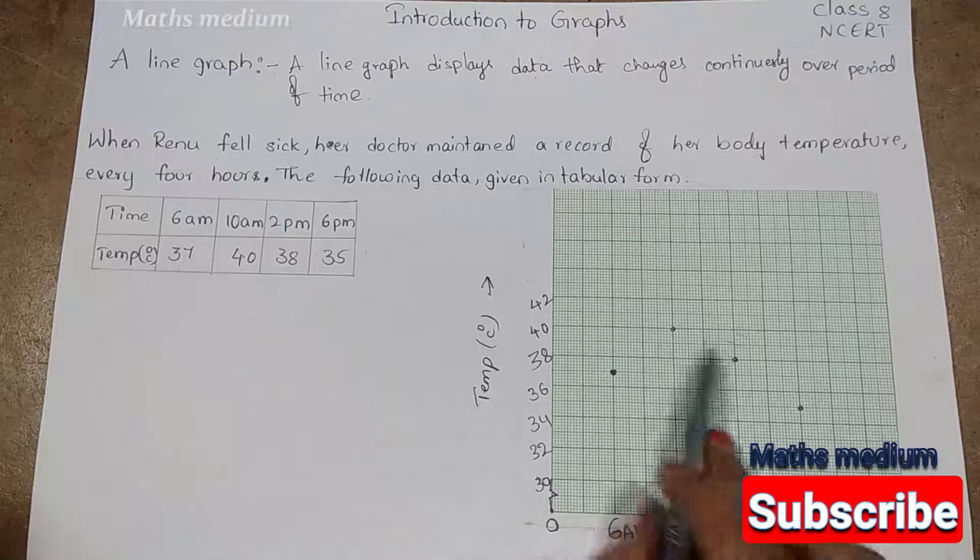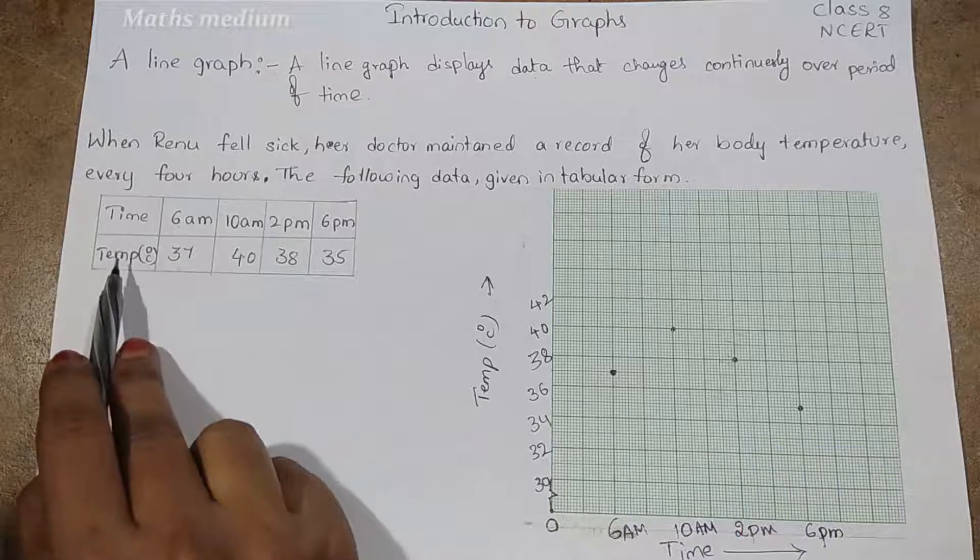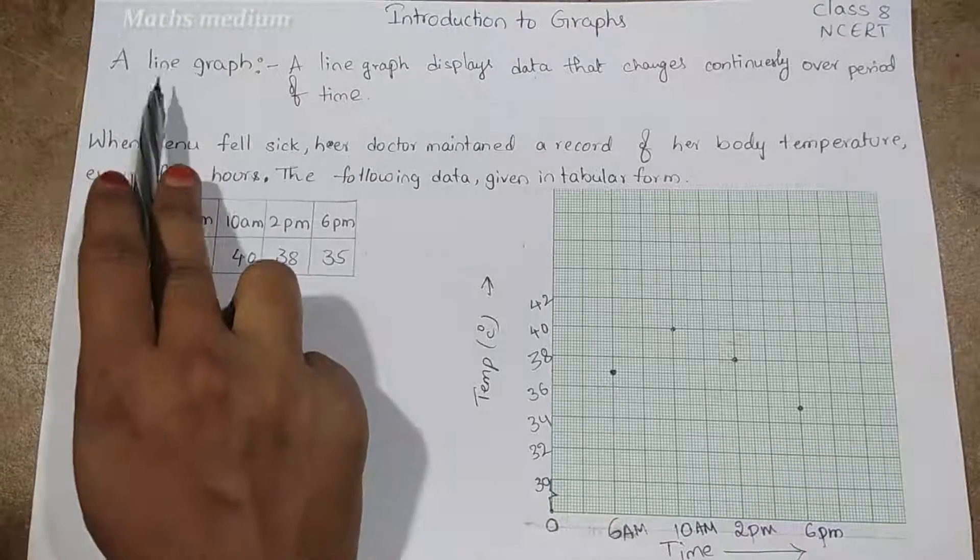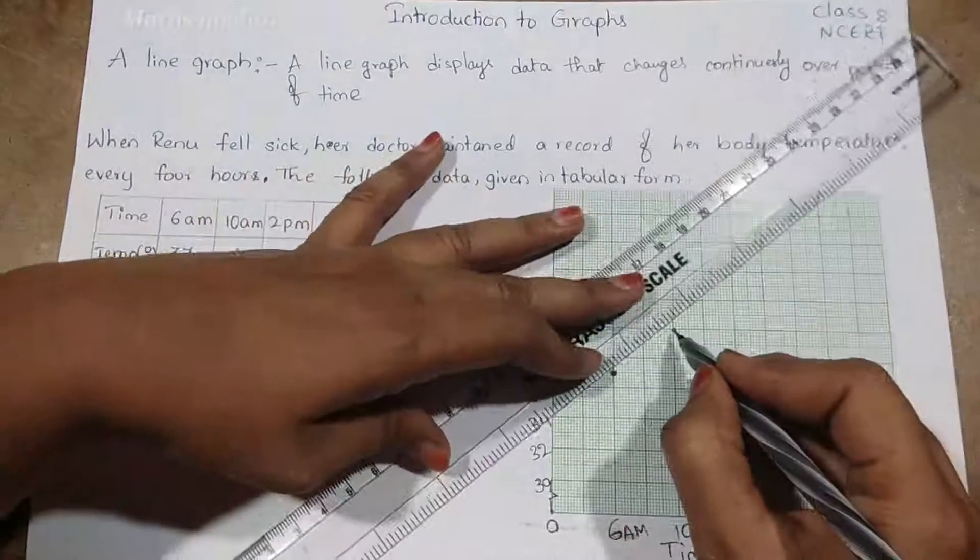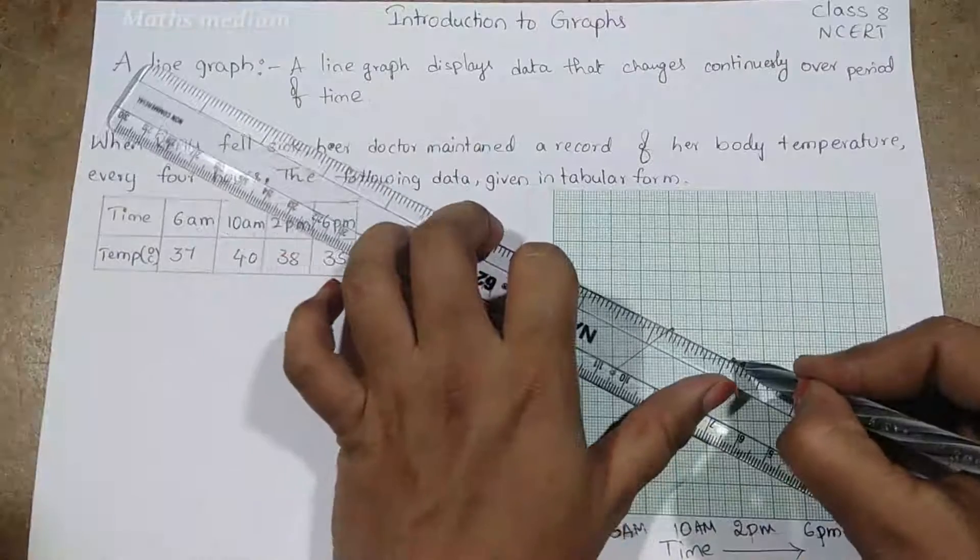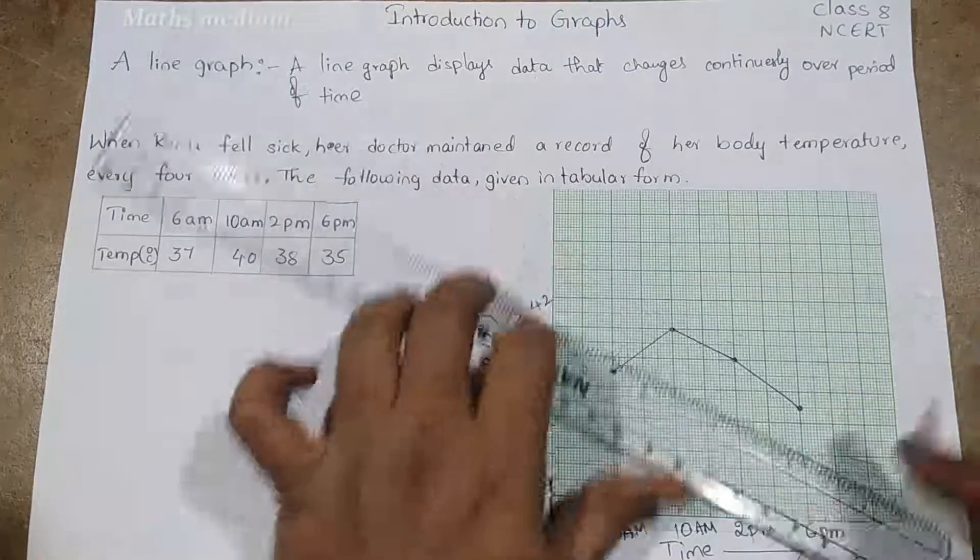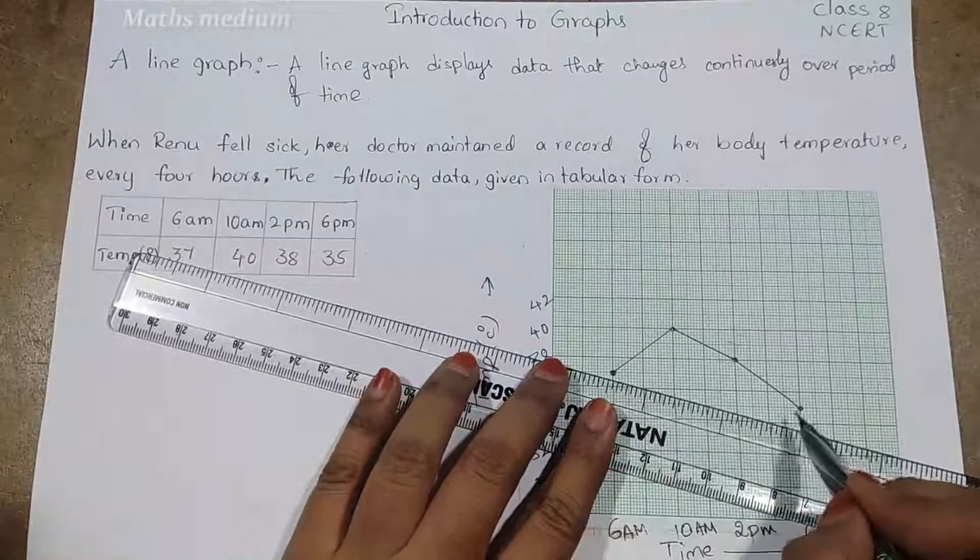So this is the representation of the points where we got the time versus temperature. Now we have to make a line graph. So by using scale, draw line segments connecting each and every point like this.